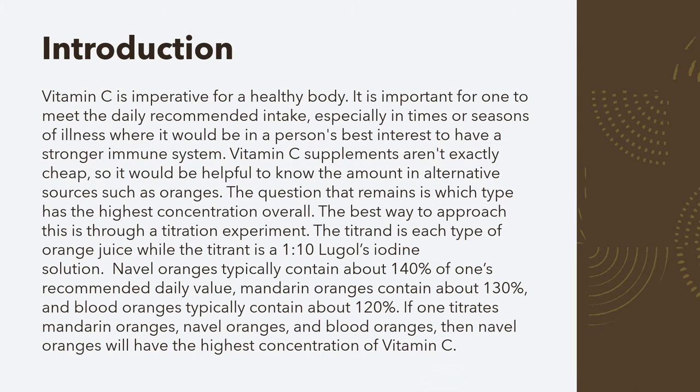Vitamin C is really important for your body. Usually people get their daily recommended value from pills or gummies, but they aren't exactly cheap. An alternative to these supplements are foods containing vitamin C, like oranges, although the issue is that you don't know how much vitamin C each type of orange contains. So to approach this issue, I decided to do a titration experiment in which I tested navel oranges, mandarin oranges, and blood oranges.